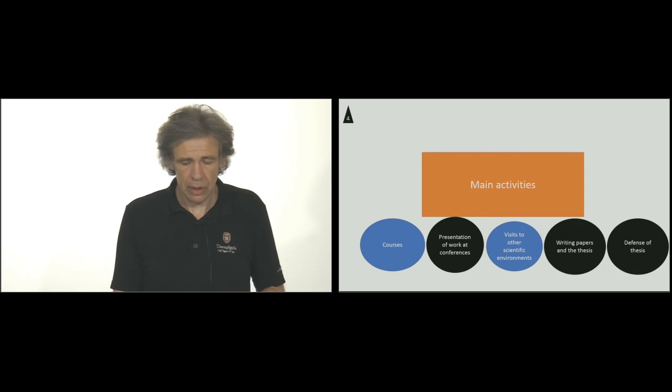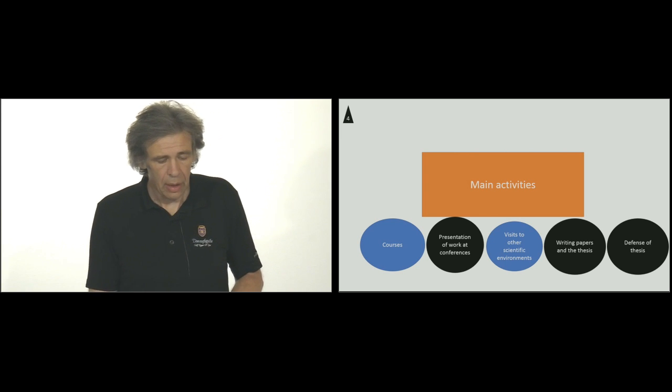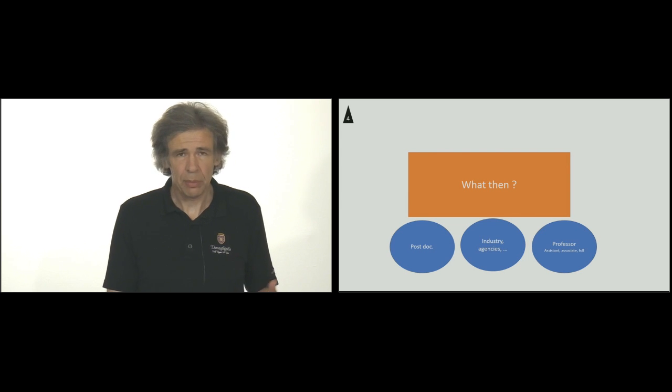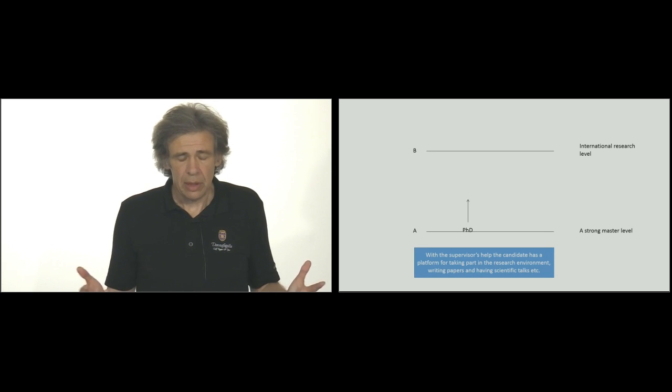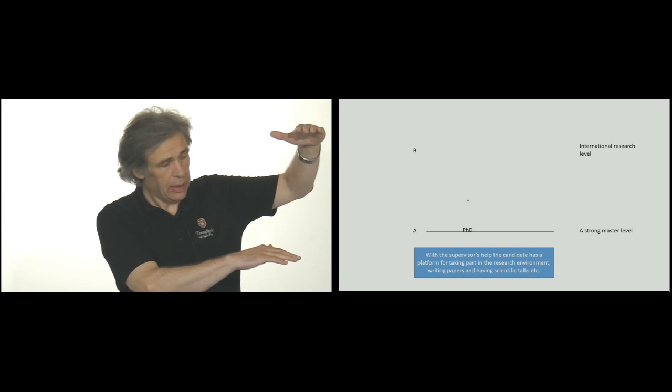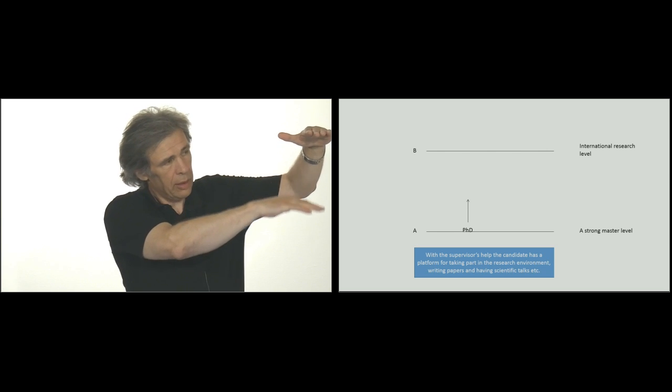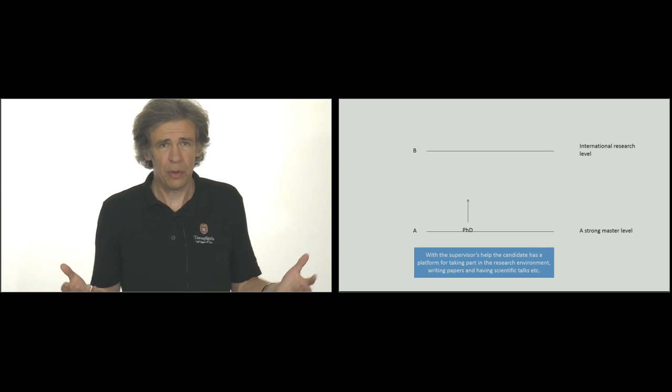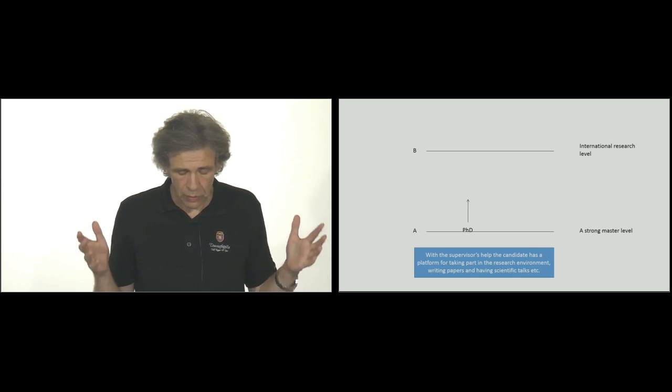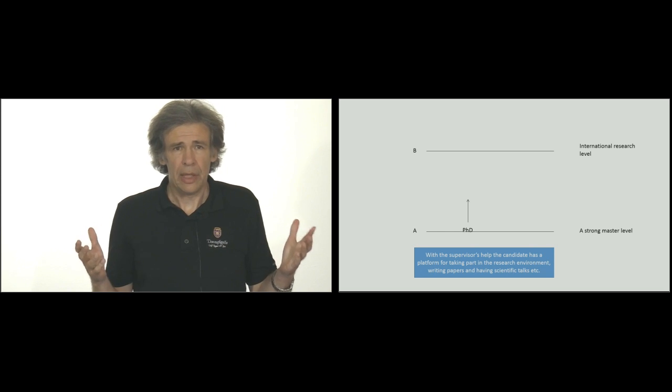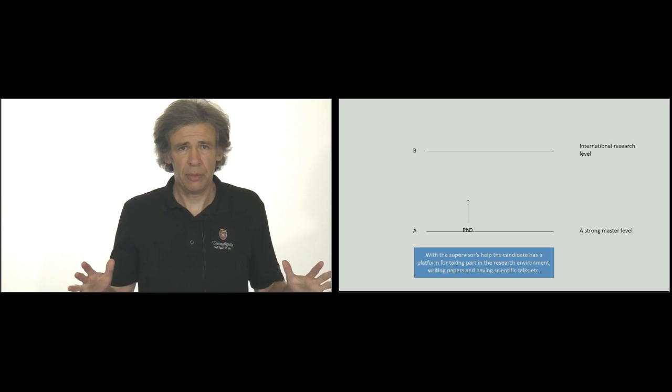We have looked into all of these activities, and we can ask, what then? Some get postdoc positions, some go to industry or agency, some become assistant professor. As I said in the beginning, hopefully the candidate has moved from the plus master level up to a higher level, approaching the international research level. We can't expect that for all the candidates, but if the supervision has been good and you are a talented person as a candidate, there is a platform that is good for you to further develop, take part in the research environments, writing papers, having scientific talks. Thank you.